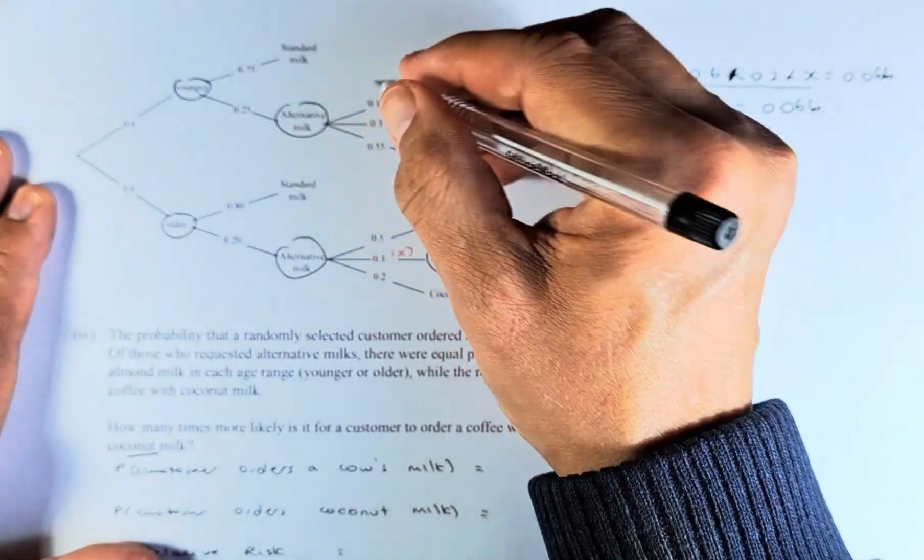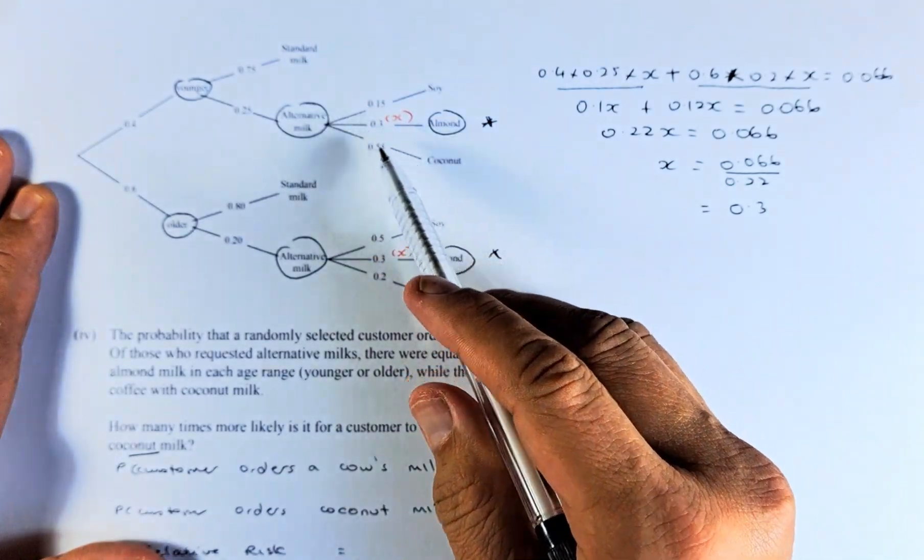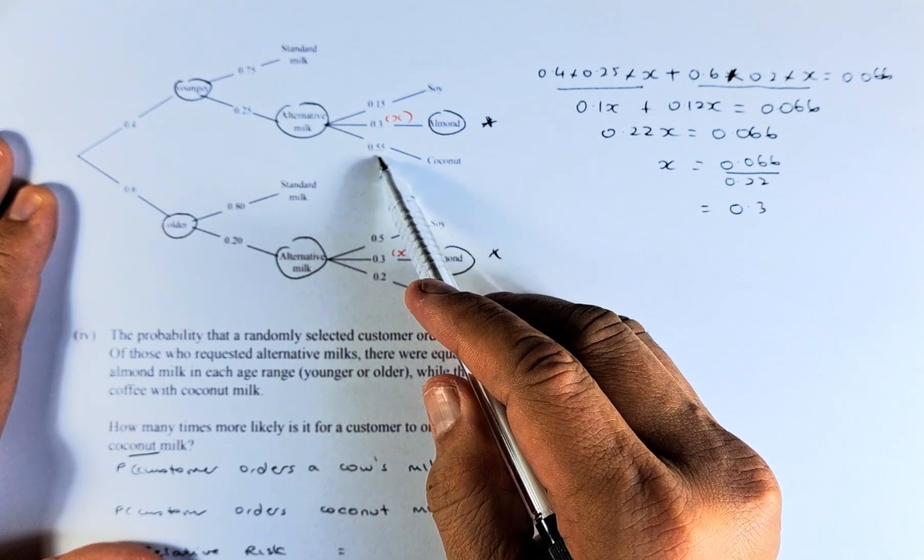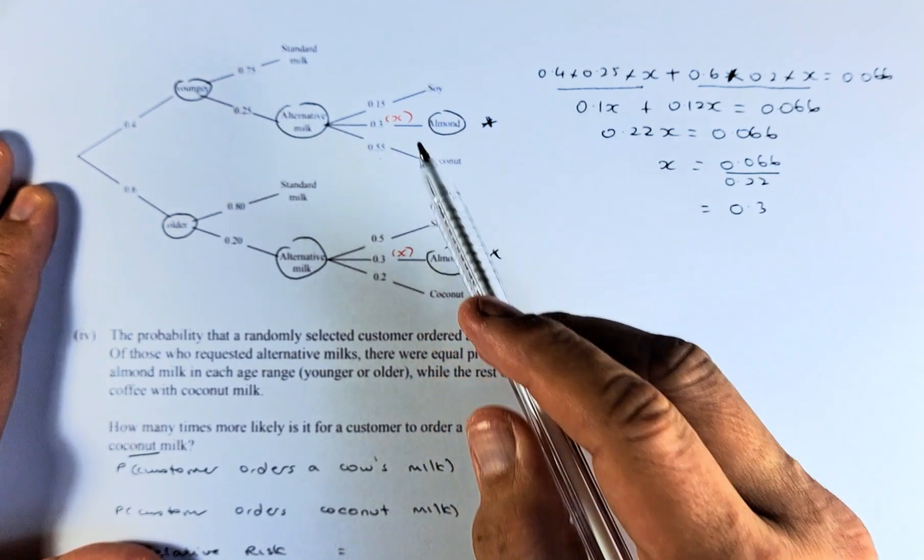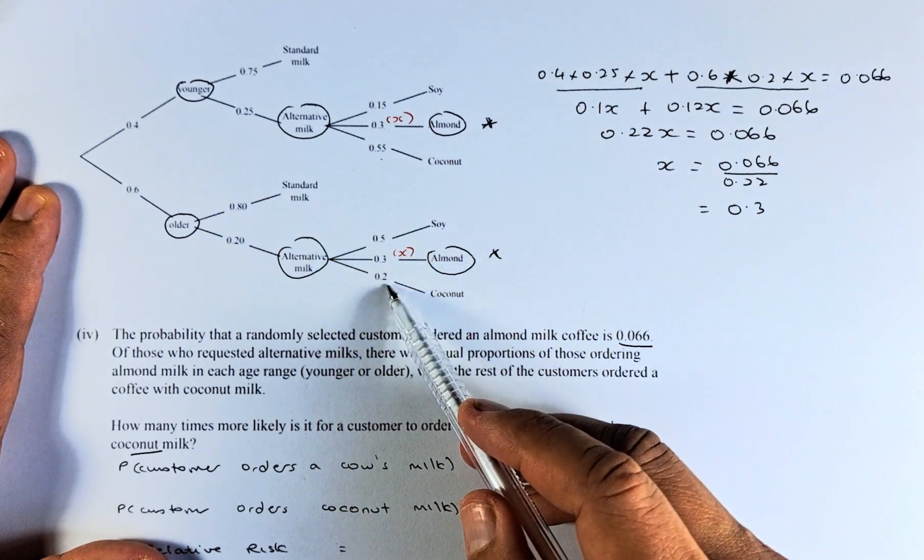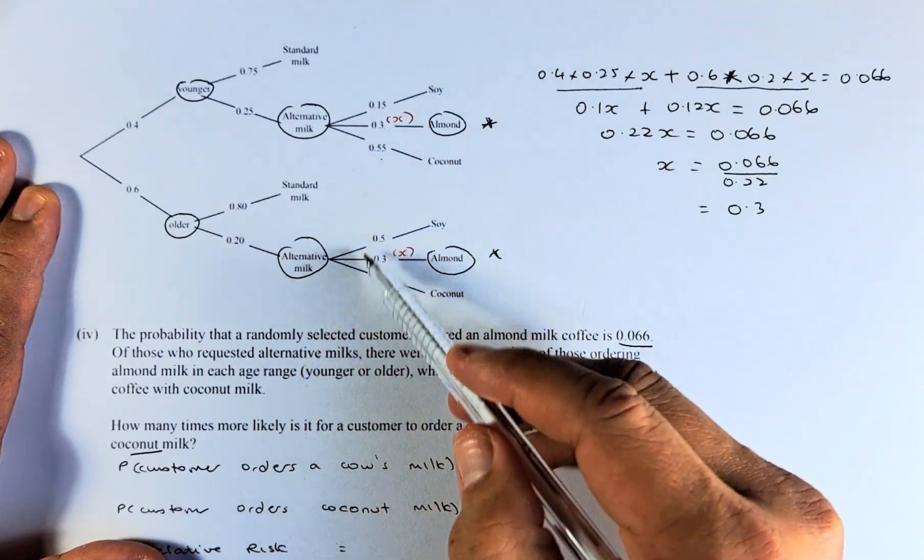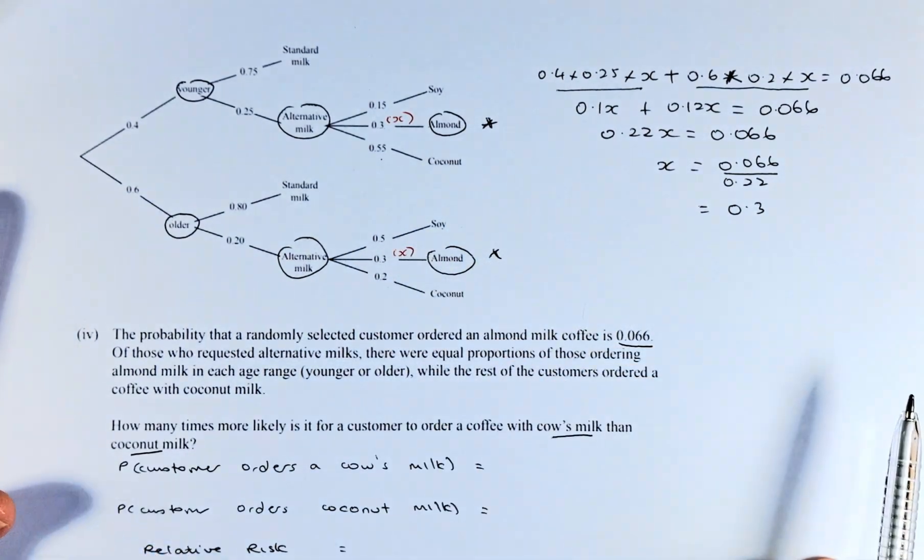And then this total must add up to 1. So 0.15 plus 0.3, so coconut has to be 0.55. Similarly 0.5, 0.3, so coconut has to be 0.2 because all these three numbers must add up to 1.